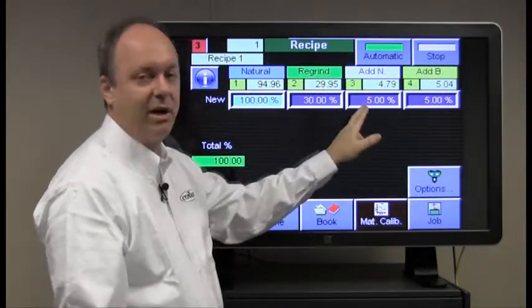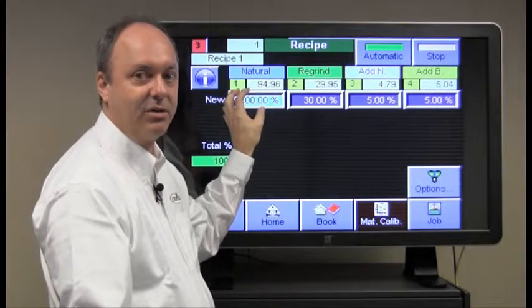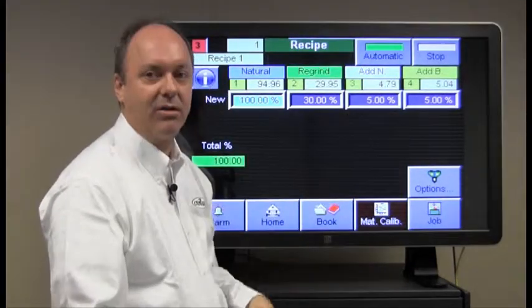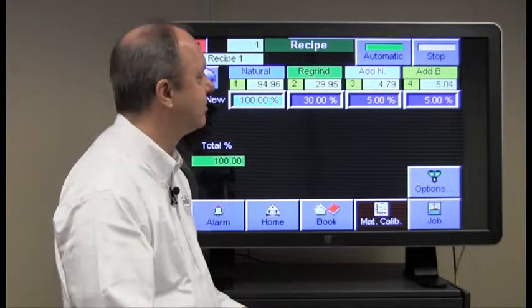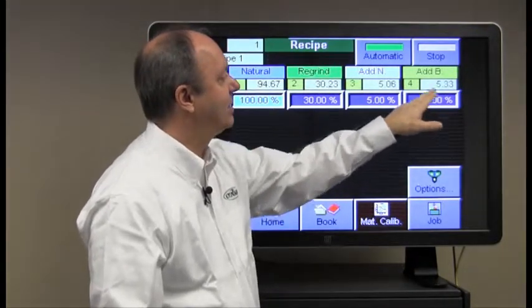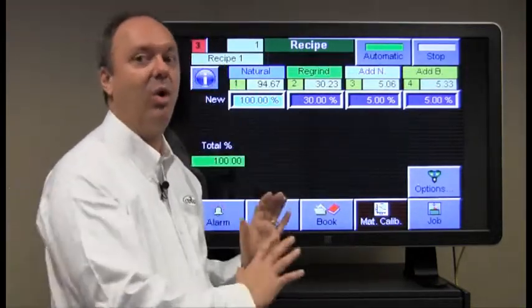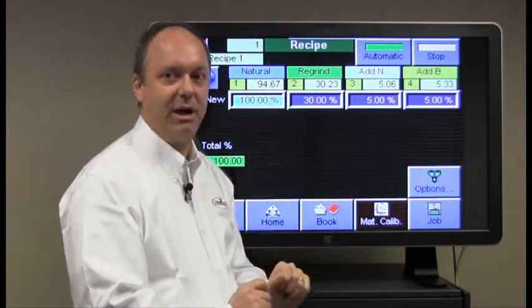So for every 100 parts of natural, we're going to put in 5 parts of additive natural. The batch is set to 5% and the way the additive batch works is it puts 5% of the entire amount of the whole batch including the regrind.